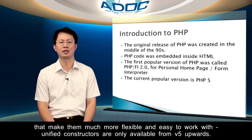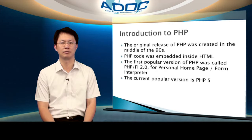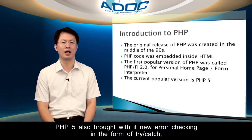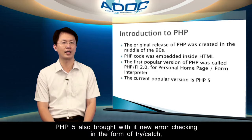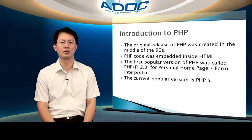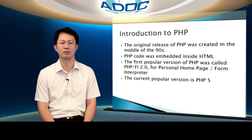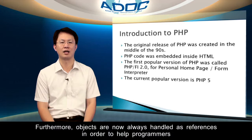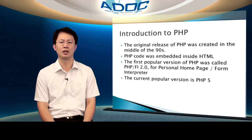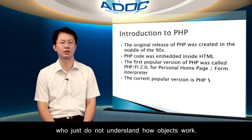Unified constructors are only available from V5 upwards. PHP-5 also brought with it new error checking in the form of try-catch, which are something that programmers from other languages have been enjoying for a long time. Furthermore, objects are now always handled as references in order to help programmers who just do not understand how objects work.